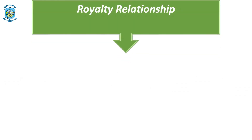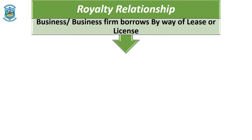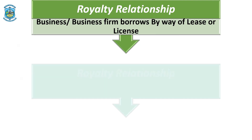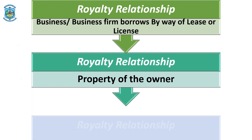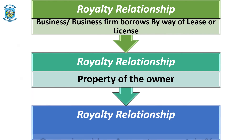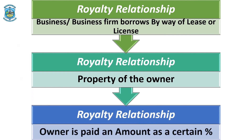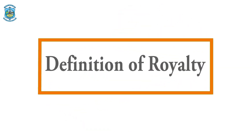The royalty relationship is all about the business or the business firm which borrows, by way of license or lease, the property belonging to the owner, and in return it pays the owner a certain percentage of the revenue or output generated by using the property. So now let's understand the definition of royalty.